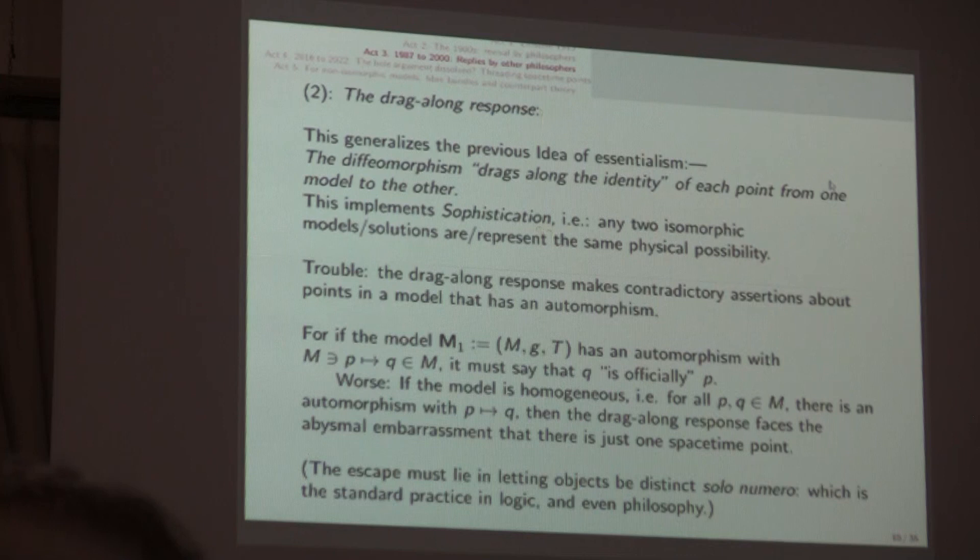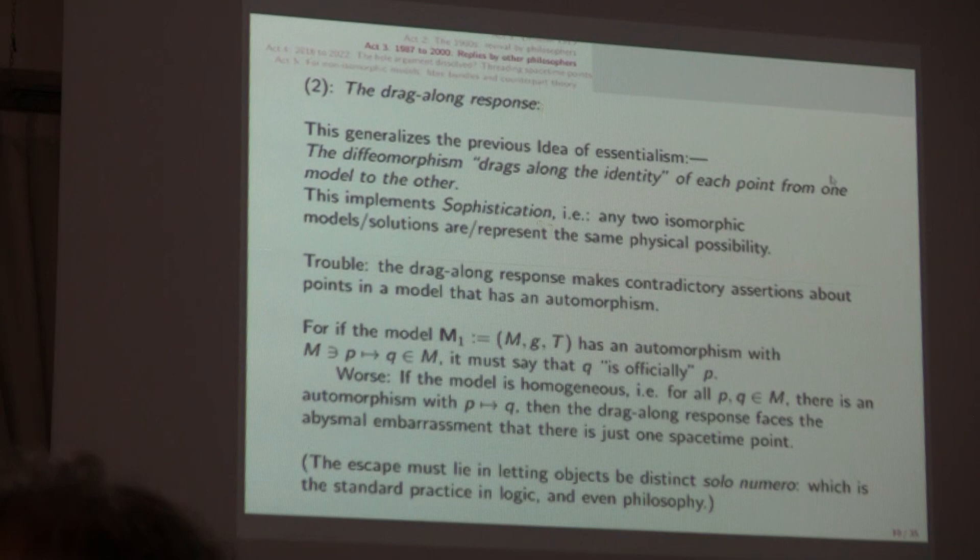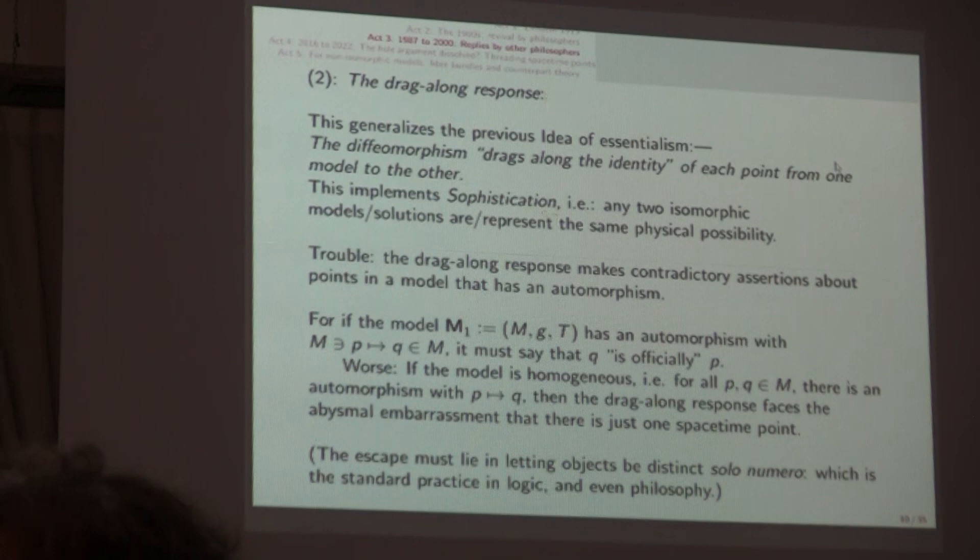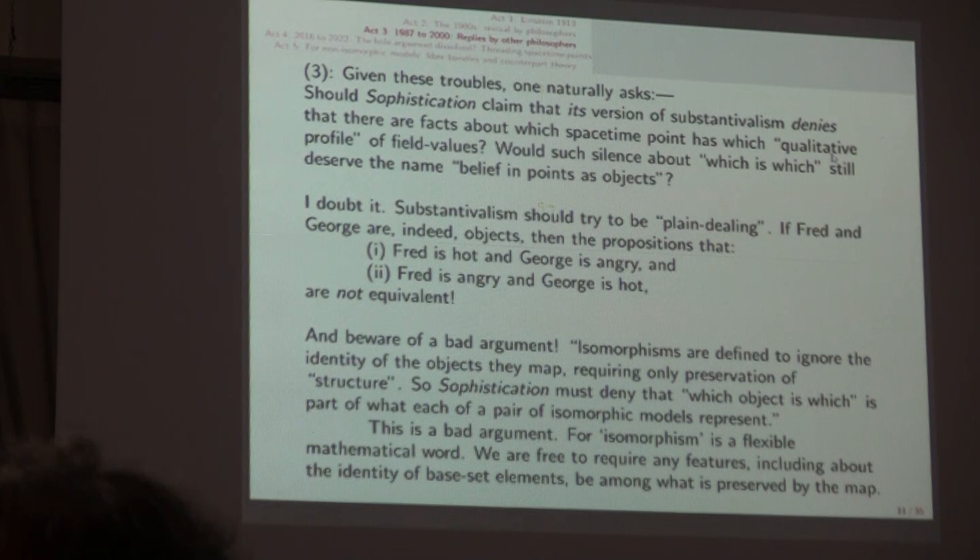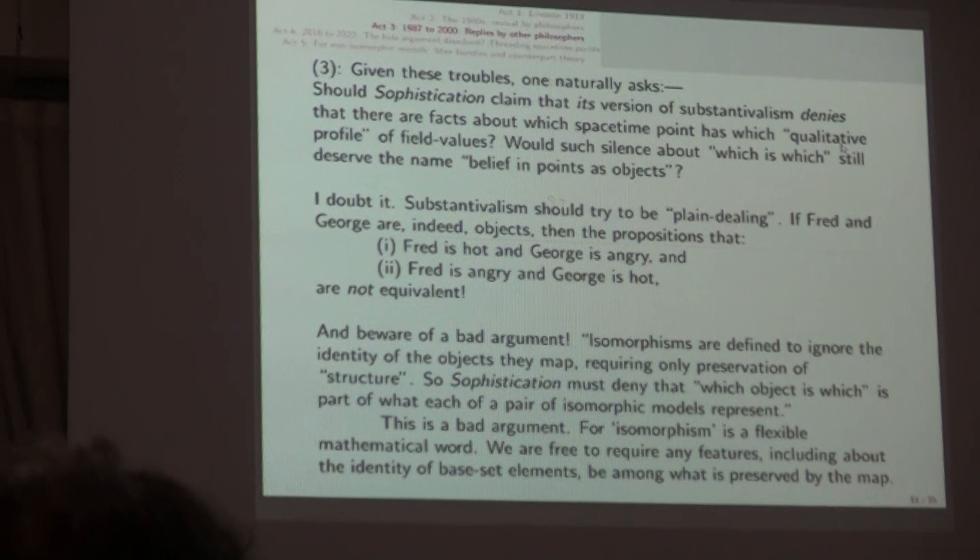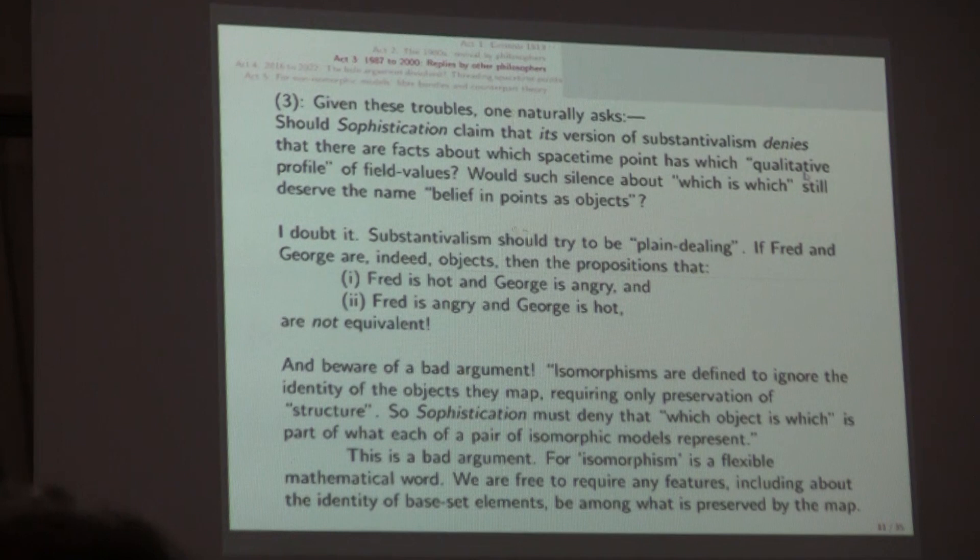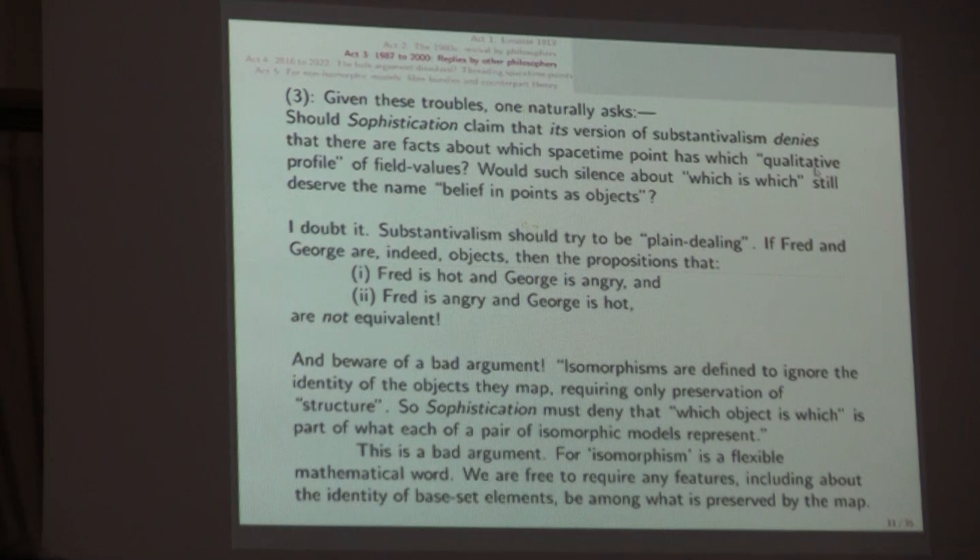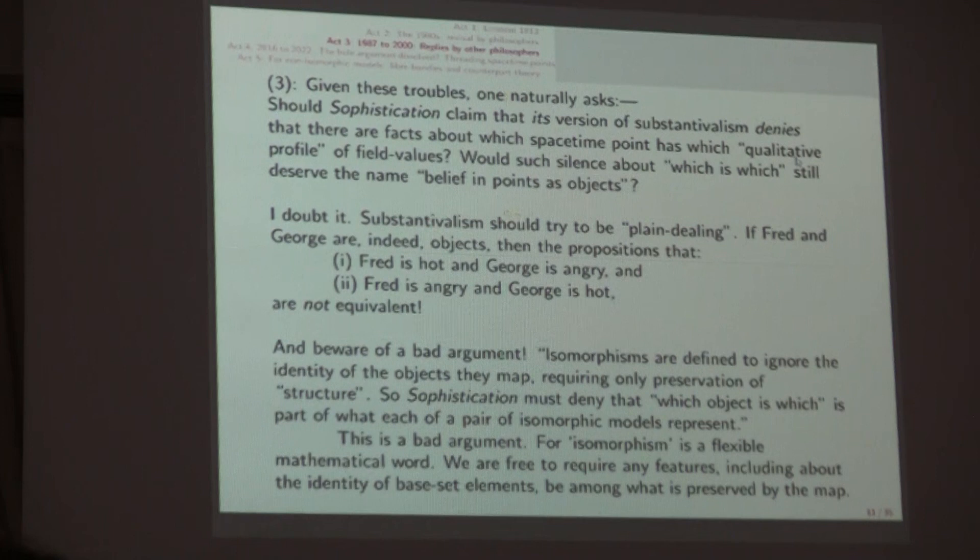The trouble with this is that it does make contradictory assertions about points in a model that has an automorphism. Because if the model you begin with bold M sub 1 has some automorphism that sends little p to little q and you then say that q is officially p, then yikes you've got two models identified in one and the same manifold. And of course if the model is homogeneous in the sense that for all p and q in the manifold there's an automorphism that sends p to q, then the drag-along response faces the abysmal embarrassment that there is just one spacetime point.